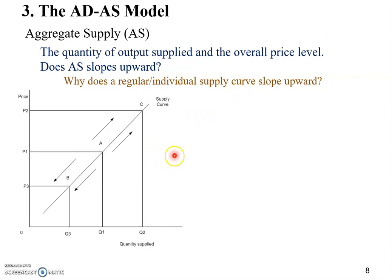Suppose this is a market for marijuana. The initial price is P1 and quantity is Q1 — point A is the initial equilibrium. Then for some reason there's an increase in the price of marijuana, and we move from A to C. That means the production of marijuana becomes more profitable, so producers want to produce more, and the quantity supplied increases from Q1 to Q2.